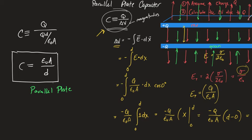Two ways to know you've done this right: Q cancels out, and whatever is left — not including epsilon naught — has units of length only. Here we have meter squared divided by meters, which is just a length. This is the capacitance of a parallel plate capacitor, and you need to commit it to memory. You have to have it from memory — it's all over the multiple choice part of the test.